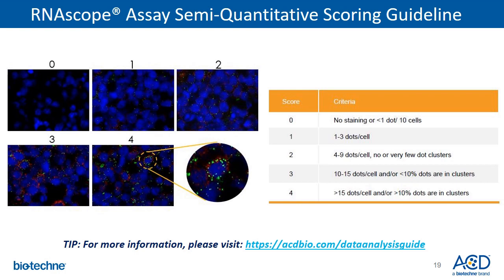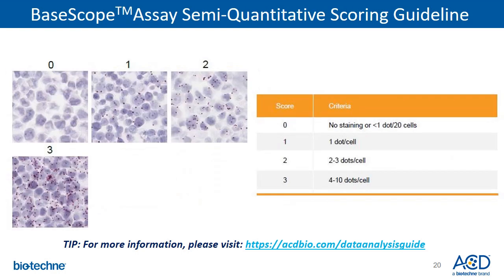Similarly, the scoring guideline is also available for a multiplex fluorescent assay as well as BaseScope assay. You may notice the BaseScope scoring guideline is slightly different from RNAscope assay in terms of number of dots per cell and the presence of clusters. This is because normally you would see much fewer signal dots with BaseScope assay as compared to RNAscope.